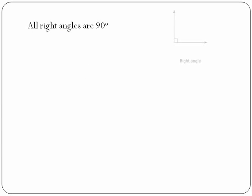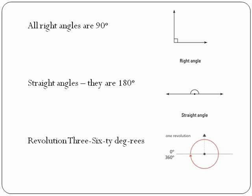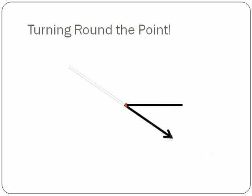Right angles are 90 degrees. Straight angles are 180 degrees. A revolution is 360 degrees. Turning round the point.